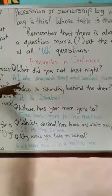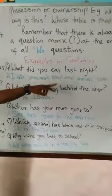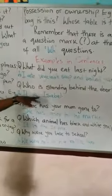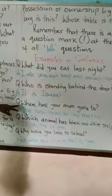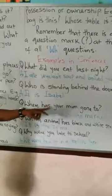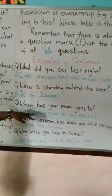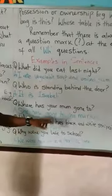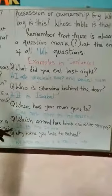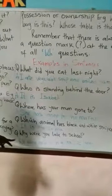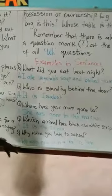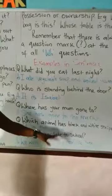Now let's look at examples. Question: 'What did you eat last night?' Answer: 'I ate vegetable soup and boiled yam.' Question: 'Who is standing behind the door?' Answer: 'It is Isabel.' Question: 'Where has your mom gone?' Answer: 'She has gone to the market.' Question: 'Which animal has black and white stripes?' Answer: 'It is the zebra.' Question: 'Why were you late to school?' Answer: 'We were held up in a traffic jam.'